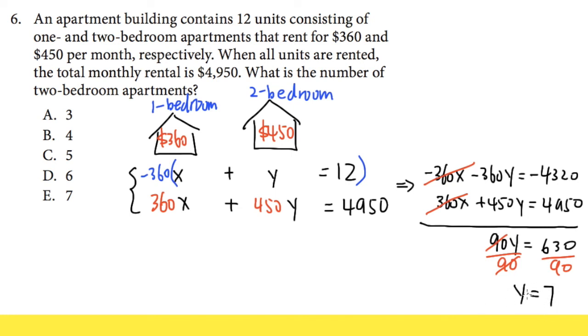We just need to solve for the y value because the question is only asking us for the number of two bedroom apartments, which is just the y. And the answer to this is choice E, lucky number 7. We are done.